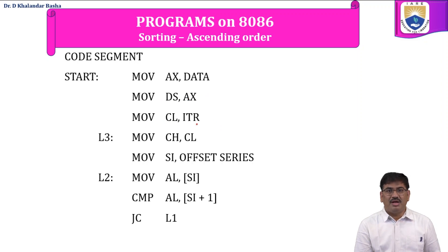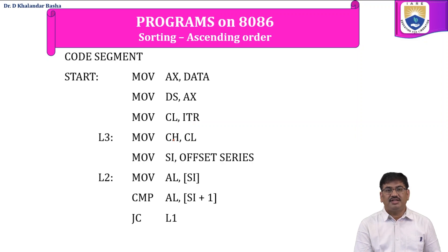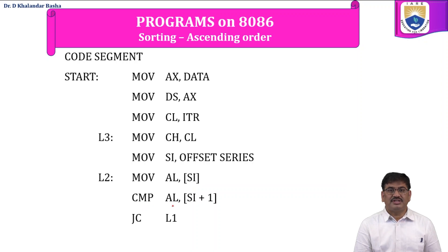Then 'MOV CL, itr' loads the number of iterations from the itr variable into CL. The same CL contents are loaded into CH. Next, fetch the address of the series variable using 'MOV SI, OFFSET series'. To fetch the data, use 'MOV AL, [SI]'. Then compare the first number in AL with the second number using 'CMP AL, [SI+1]'. If the first number is greater than the second, we go for exchange; otherwise no exchange.